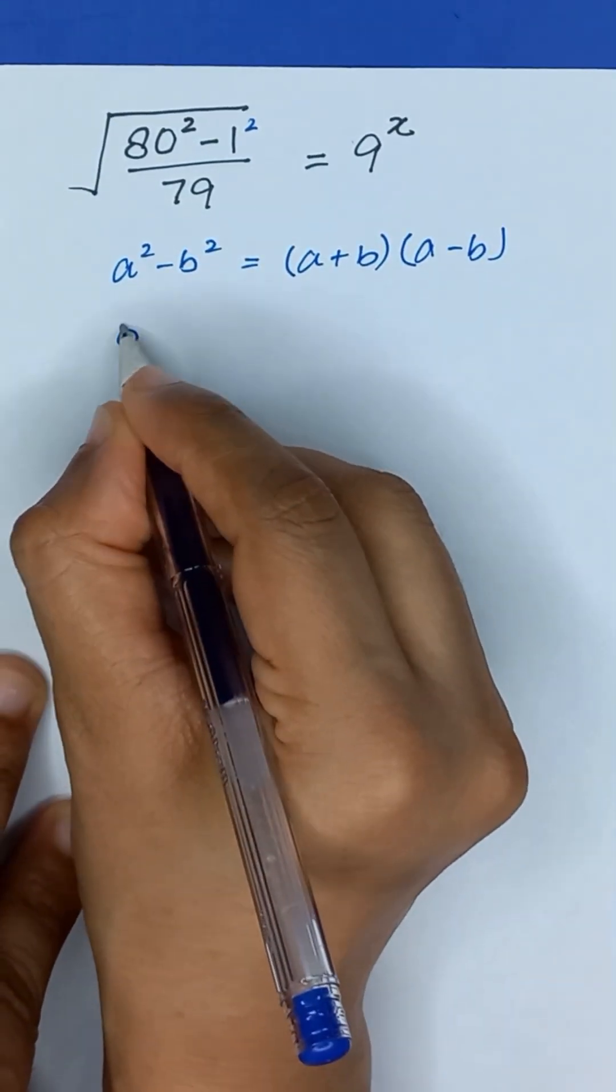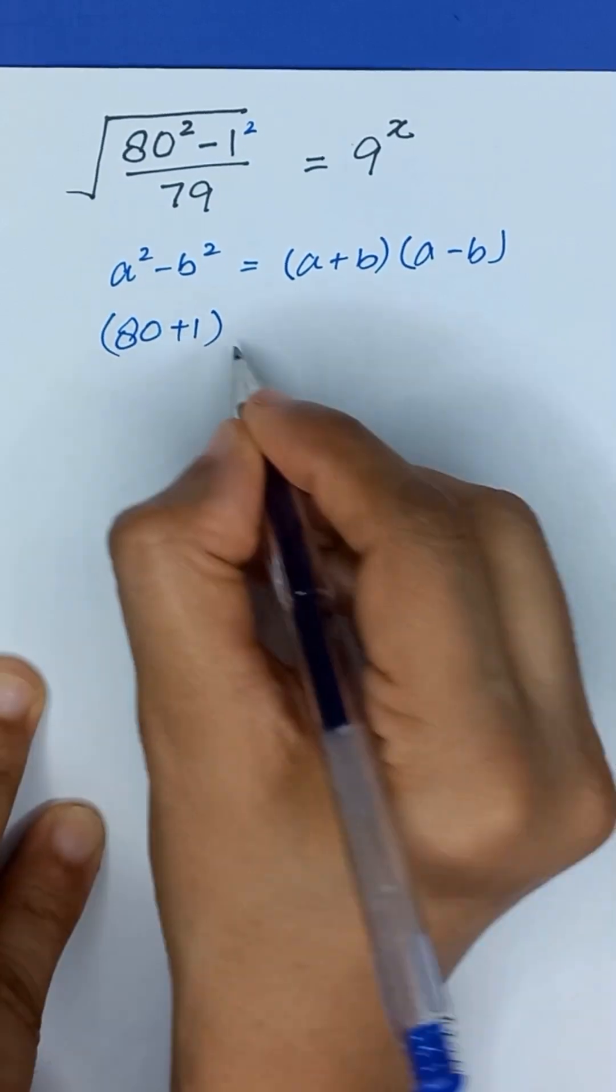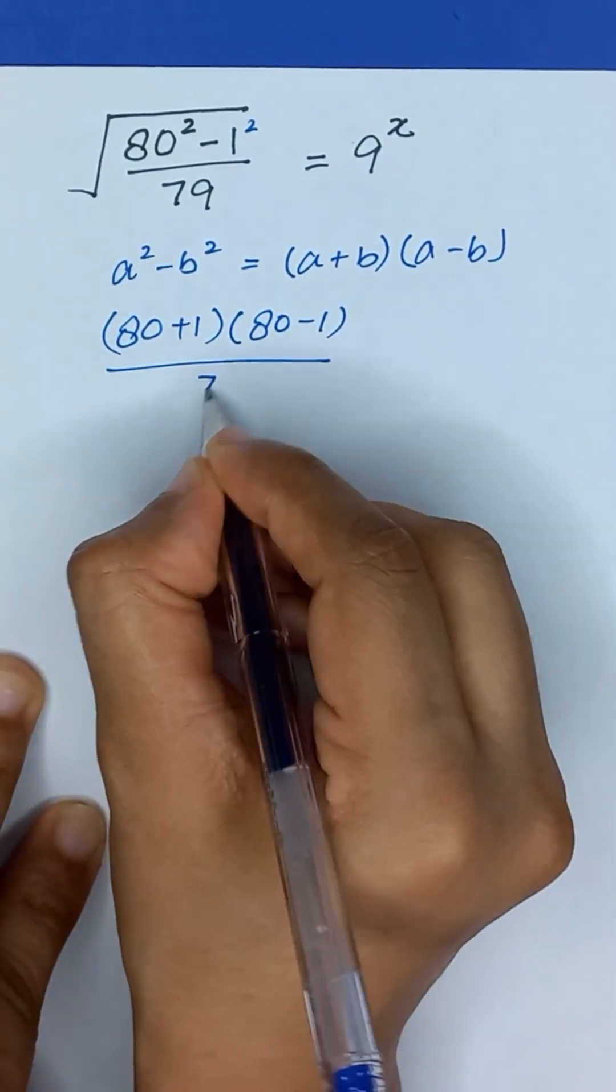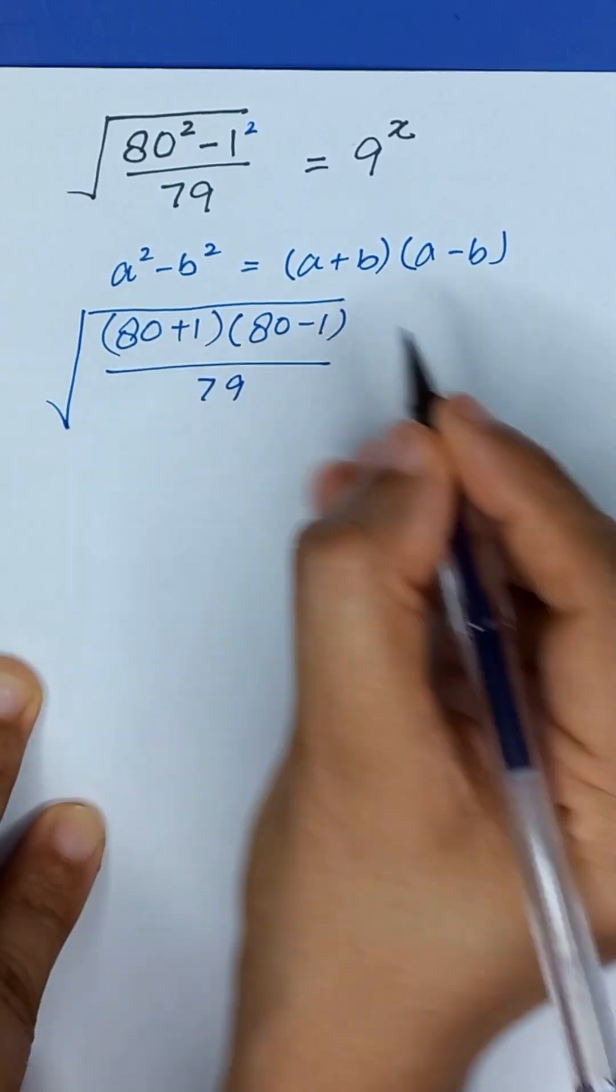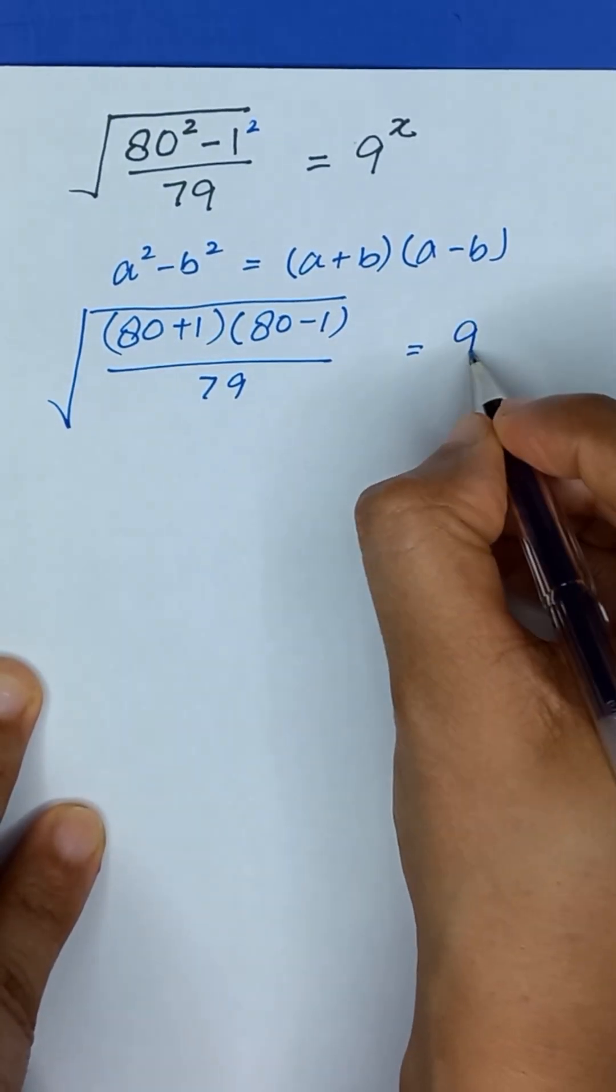So it will become 80 plus 1 times 80 minus 1 divided by 79, and its square root is equal to 9 to the power x.